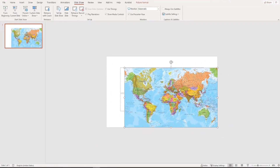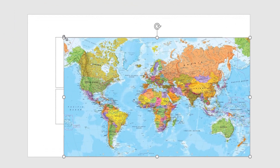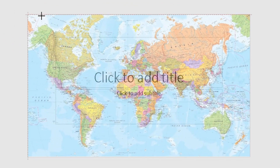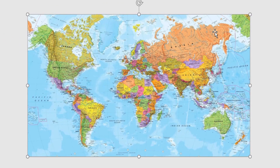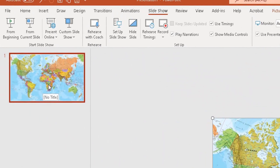So the first thing I do is take this picture of the map of the world and resize it to fit the whole slide. I've done that now — it fits the whole slide. This is a good quality 4K picture.